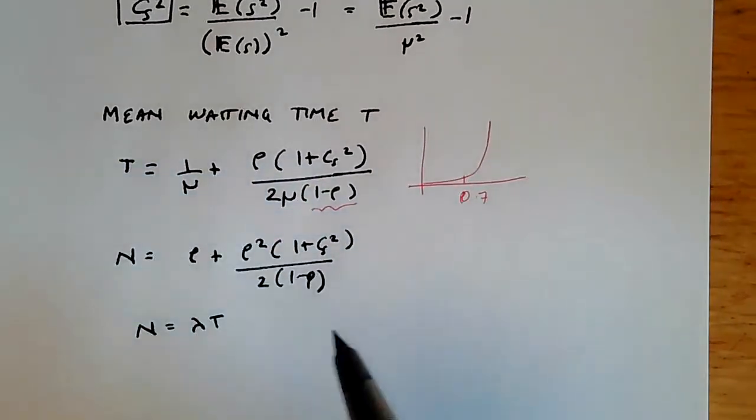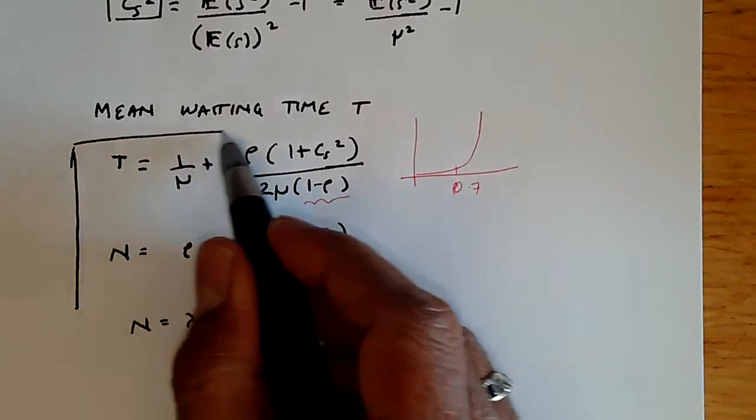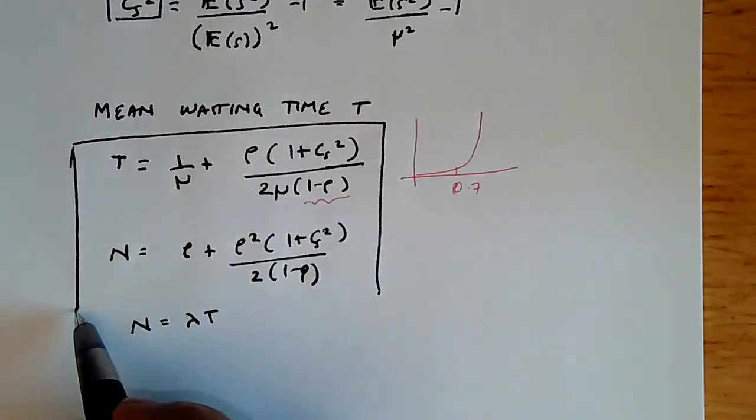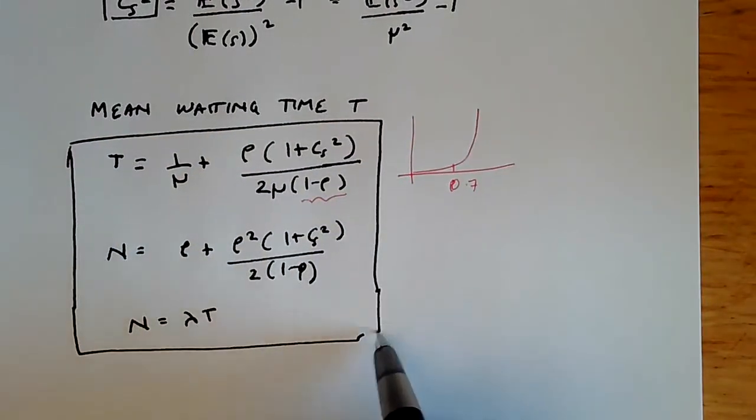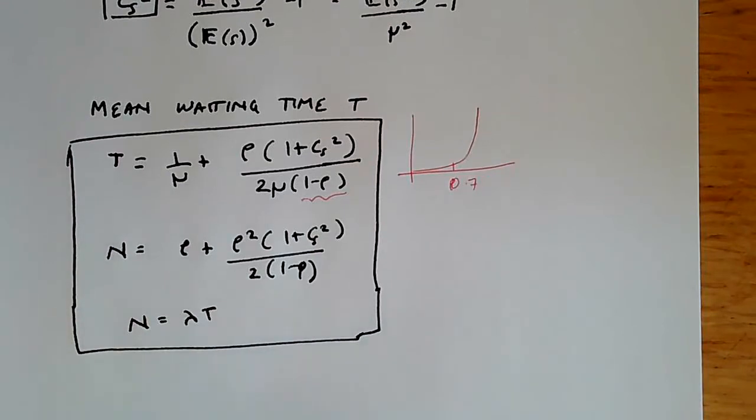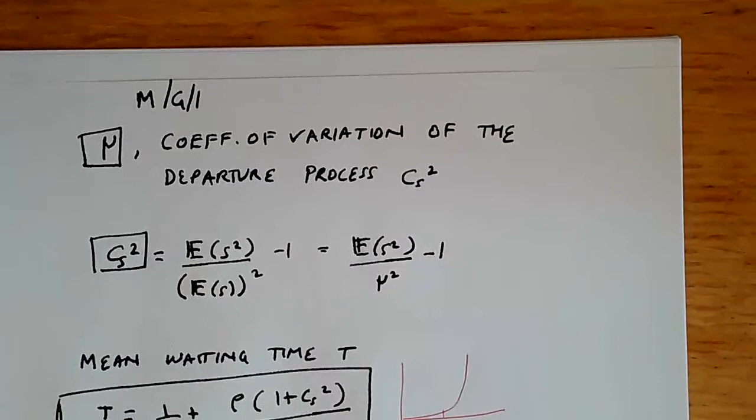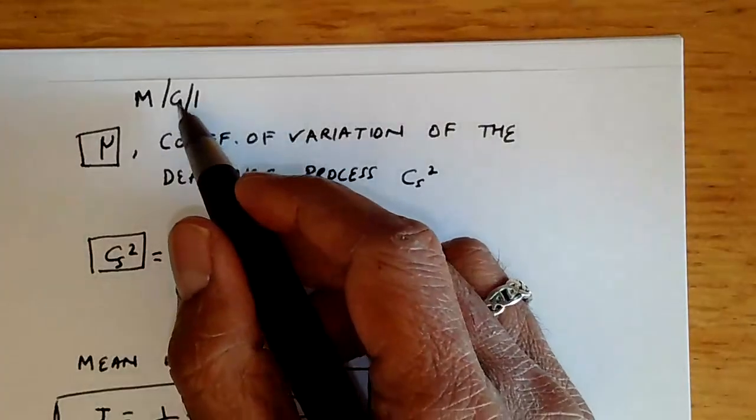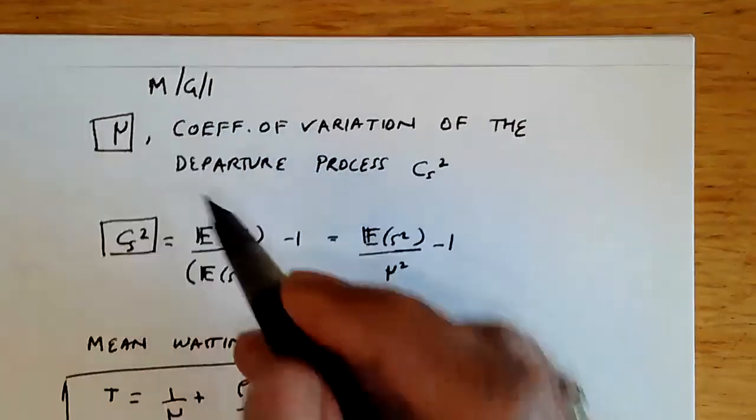These two formulas are closely related by Little's law, which holds for all queues. If you're in a situation where the departure process is general and you're given μ and C_S squared, you can use these two formulas to derive the quantities of interest.